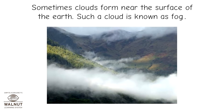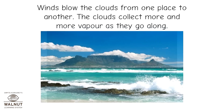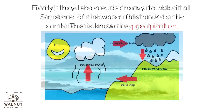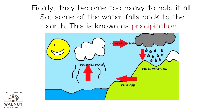Sometimes clouds form near the surface of the earth. Such a cloud is known as fog. Winds blow the clouds from one place to another. The clouds collect more and more vapor as they go along. Finally, they become too heavy to hold it all, so some of the water falls back to the earth. This is known as precipitation.